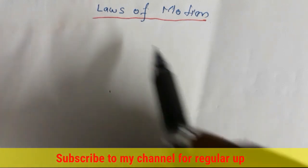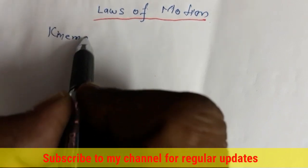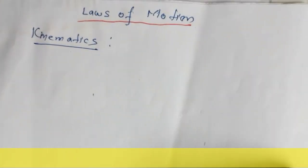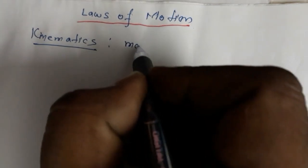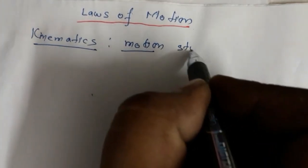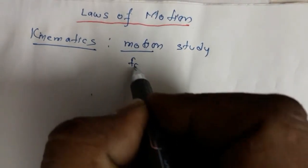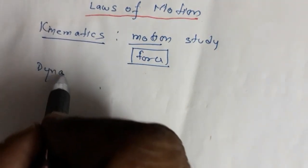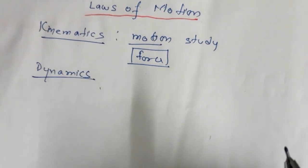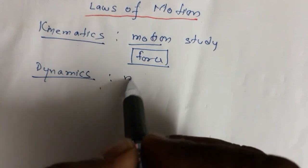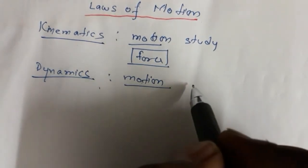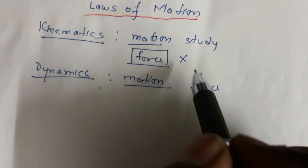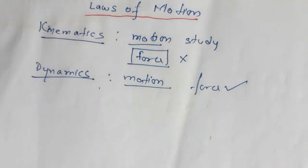Prior to this chapter, we studied kinematics — the motion of bodies without taking into account force. The concept of force was not introduced in kinematics. Here in dynamics, we are going to study the motion of single or connected bodies by taking into account the force.